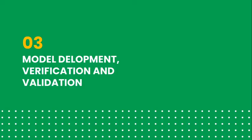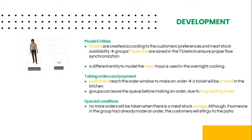Now we are going to show our implementation of the problem in the Simio software. In our model, we use three different types of entities: Tickets, Meat Batches, and Customers. If the group reaches the order window, they will make an order. A ticket for each customer will be printed according to the customer's preference and meat availability at the time. This will save the details of the customer that will be needed in the future.